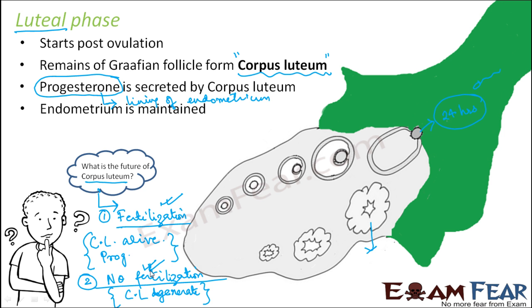Corpus luteum will degenerate, menstruation will happen. Once menstruation is over, the secretion of LH and FSH hormones will take place again. As a result, follicular growth will start. Follicular growth will lead to ovulation. Once ovulation takes place, corpus luteum will be formed again. So the process will keep on continuing.